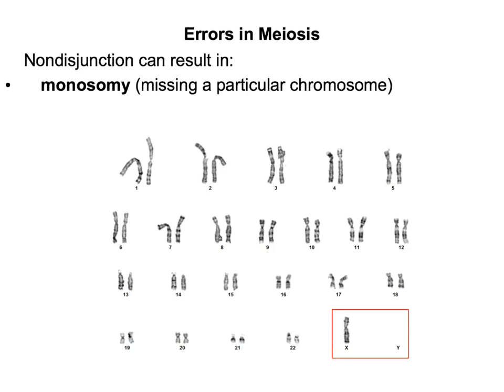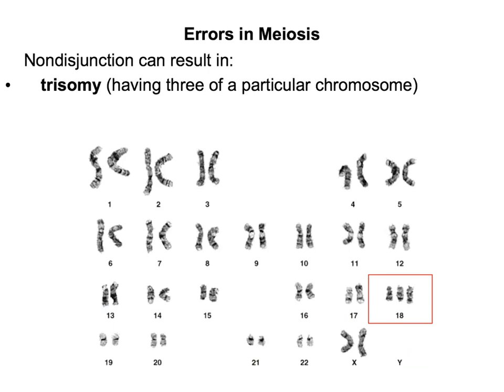Monosomy means that an organism, or in this case a person, is missing a particular chromosome. Down in the red box, it's showing where the sex chromosome should be — there should either be two X's or an X and a Y. In this case, we are missing a second chromosome, either another X or a Y. That's known as monosomy because there's only one chromosome where there should be two. The other nondisjunction error can result in trisomy, which is having three of a particular chromosome. This happens if you inherited two chromosomes from one parent and one chromosome from another, resulting in three — which is trisomy.